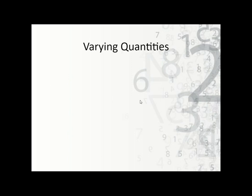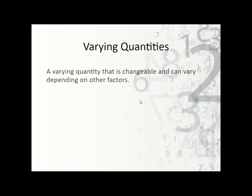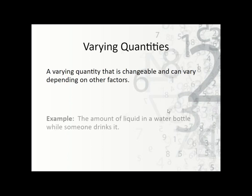Varying quantities change — these are changeable quantities that depend on other factors. Going back to the water bottle scenario, the amount of water in the bottle changes: I can fill it up so it increases, or I could drink some out of it and it goes down. So the amount of liquid in the bottle does change, but the size of the bottle doesn't.